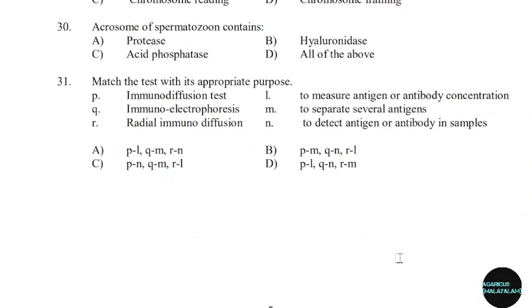30th question: A chromosome of a spermatozoon contains. Correct answer: Option B — All of the above.